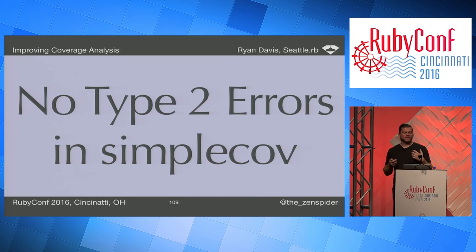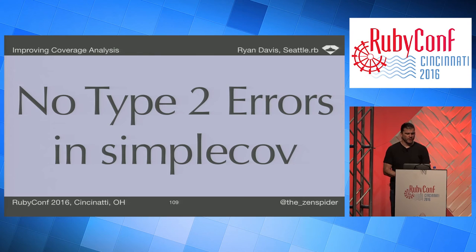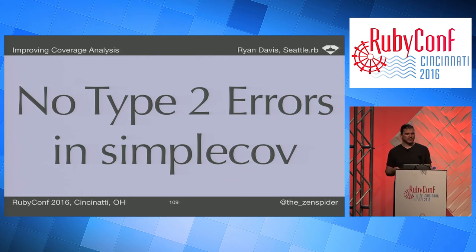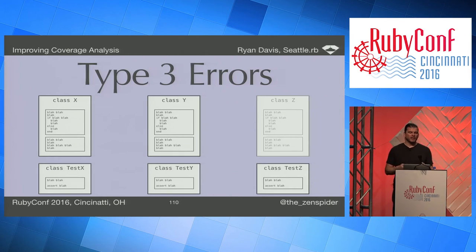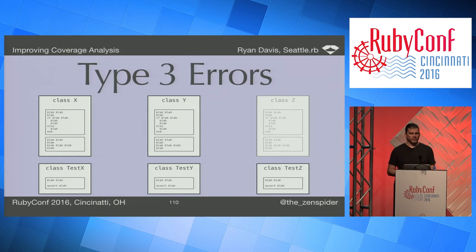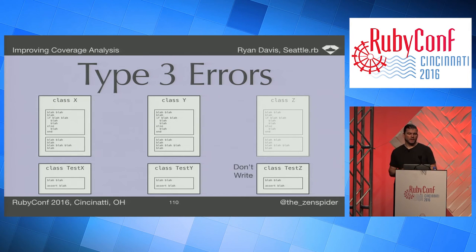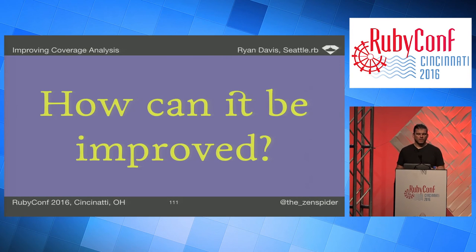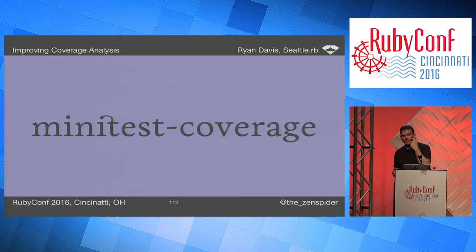For Type 2 errors: simply because coverage deals with lines and files, SimpleCov doesn't seem to have this error type currently — but I intend to show that they can exist. For Type 3 errors, it's entirely dependent on your sampling. You need to ensure that all implementation is loaded and therefore known by the coverage analysis. If you don't load them, you'll have high numbers.